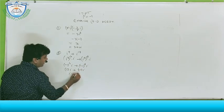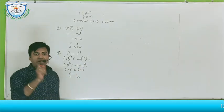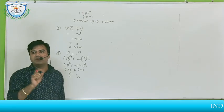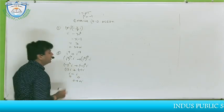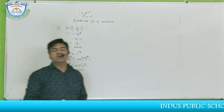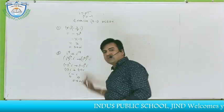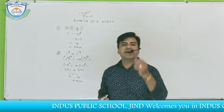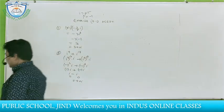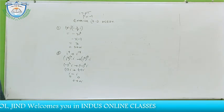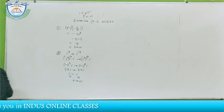We have to write the answer in the form a plus iota b. The result is 0, so you can write 0 as 0 plus 0 iota. This is question number 2 according to the NCRT book, Exercise 5.1, and the answer is 0.